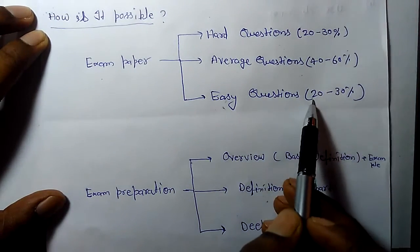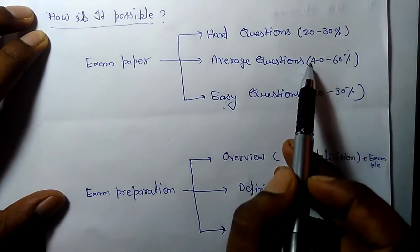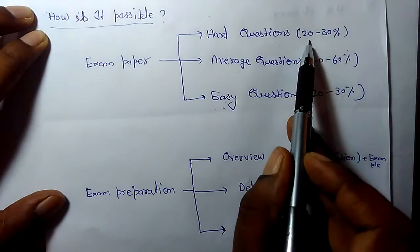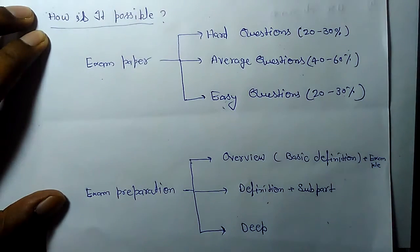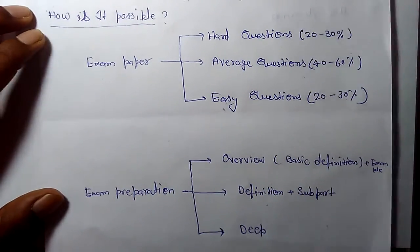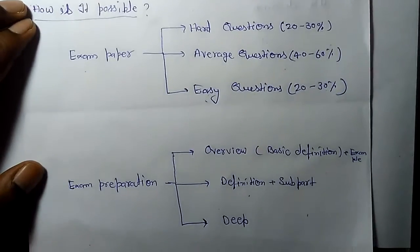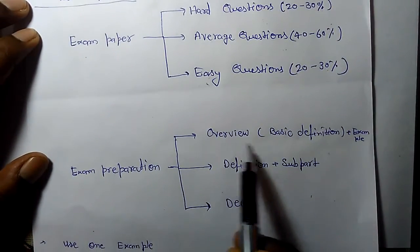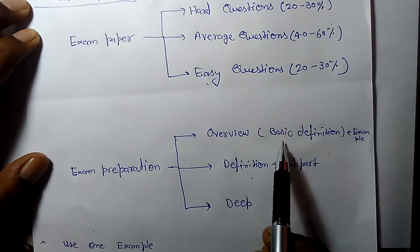Easy questions 20-30%, average questions 40-60%, hard questions 20-30%.